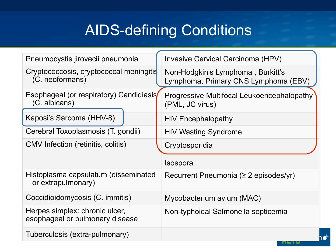This is a list of the AIDS-defining conditions. We have no therapy for some of them, including progressive multifocal leukoencephalopathy caused by JC virus, HIV encephalopathy and wasting, and diarrheal pathogens like cryptosporidia and microspordia. Initiating antiretroviral therapy is really the only way to control them. Also on the list are conditions caused by viruses: Kaposi sarcoma caused by HHV-8, invasive cervical cancer caused by human papillomavirus types 16 and 18, and lymphomas highly associated with EBV. Whether infections or tumors, all are AIDS-defining conditions.